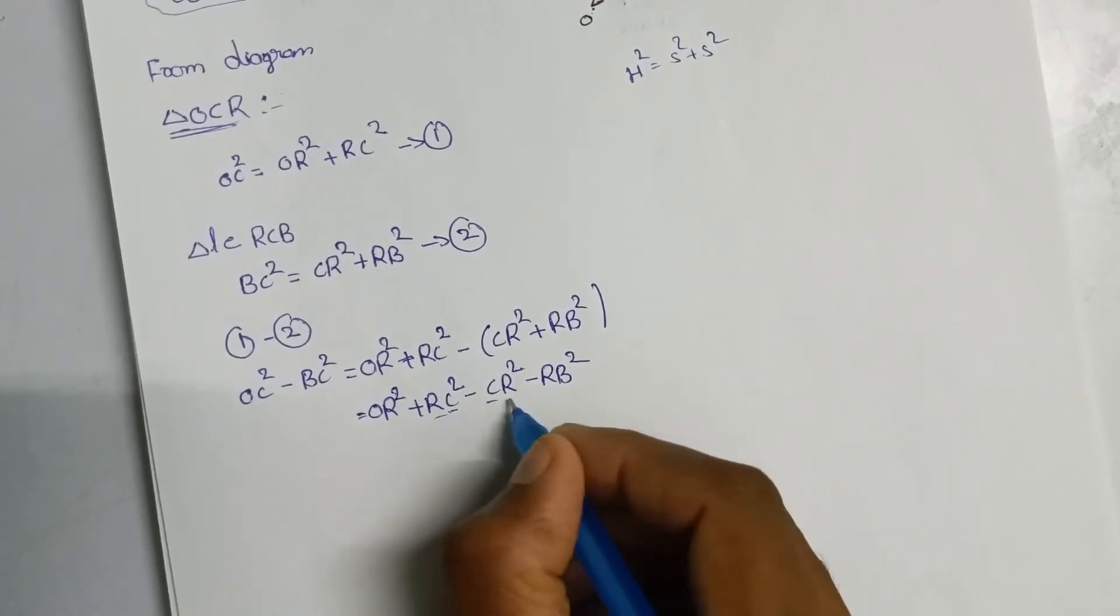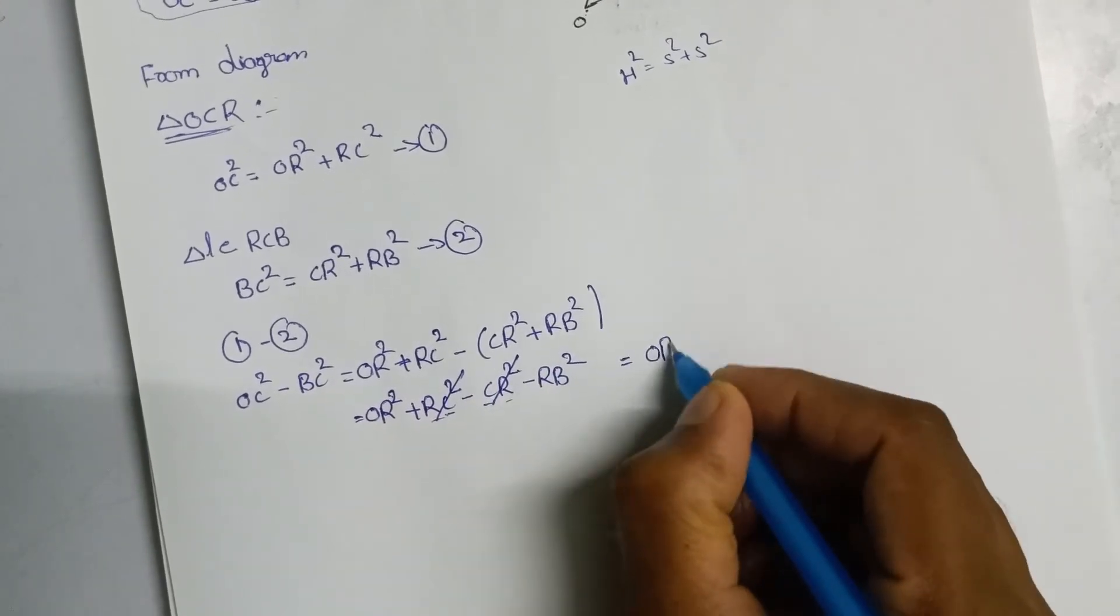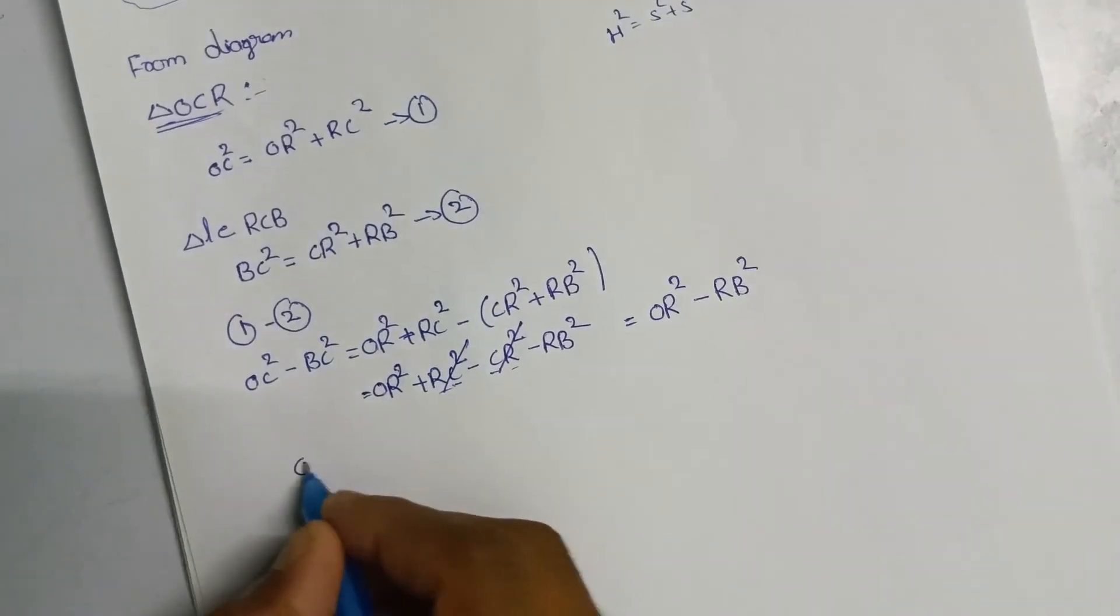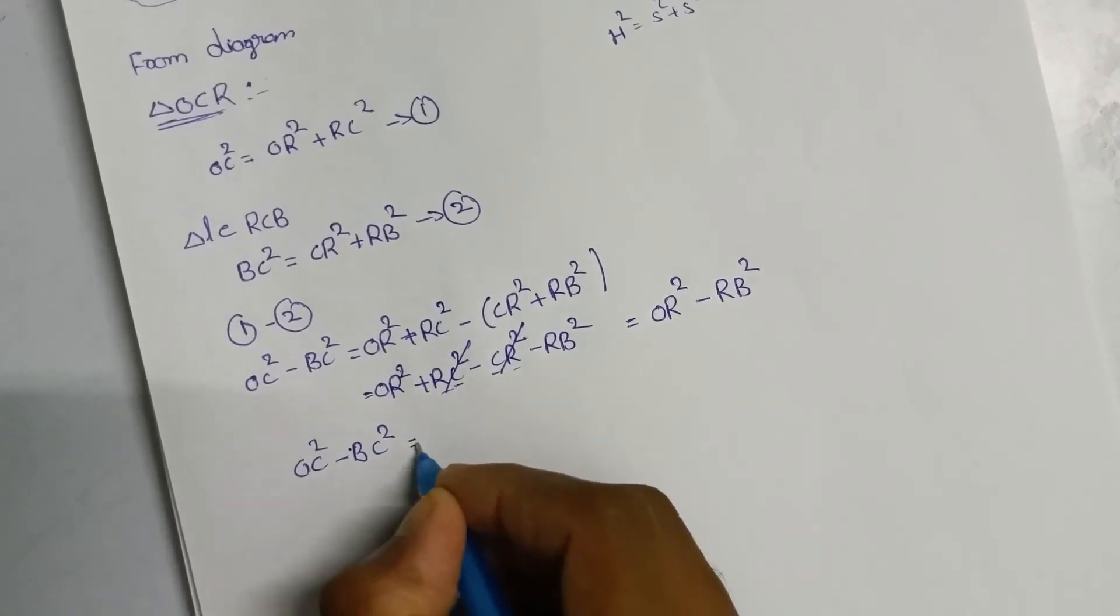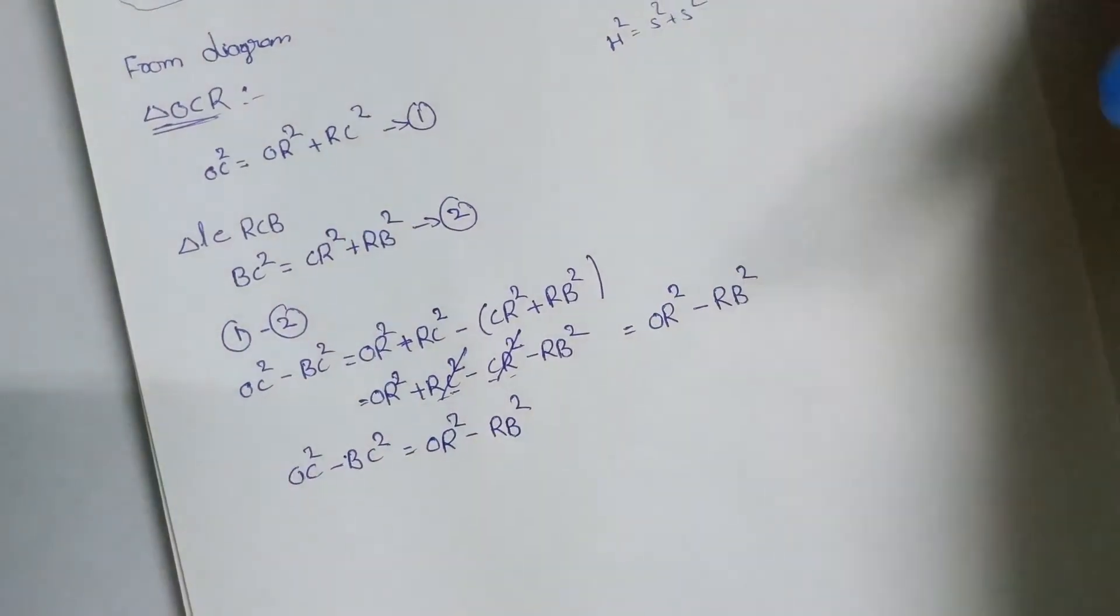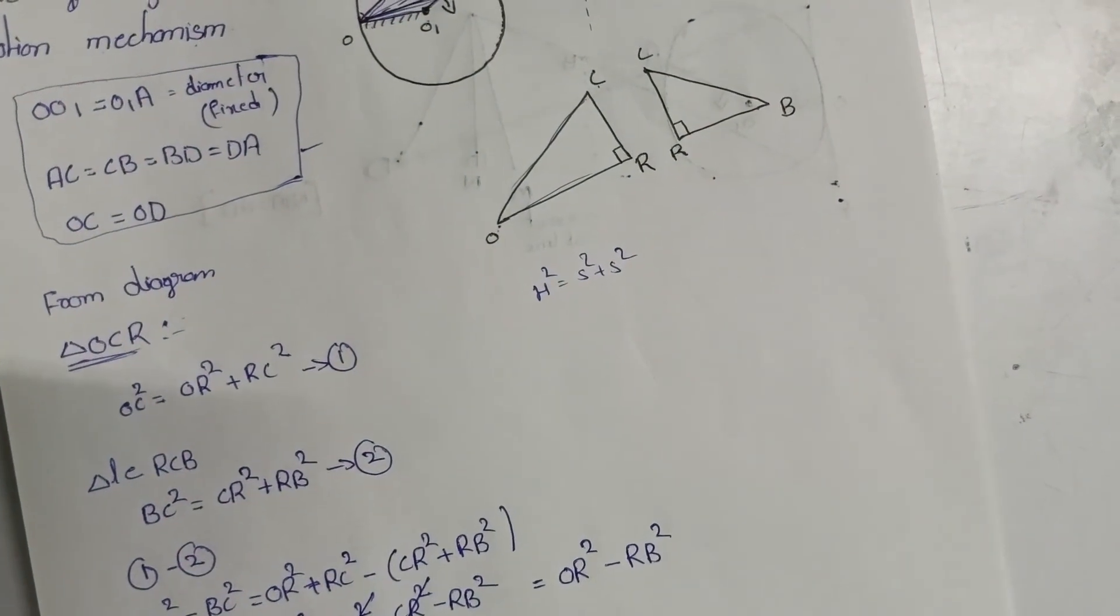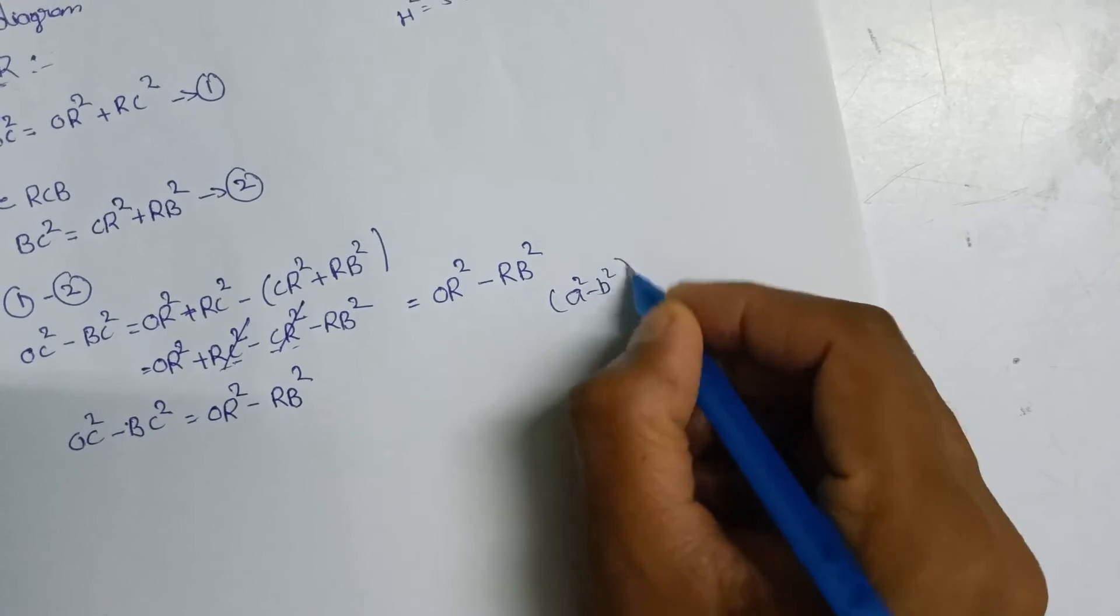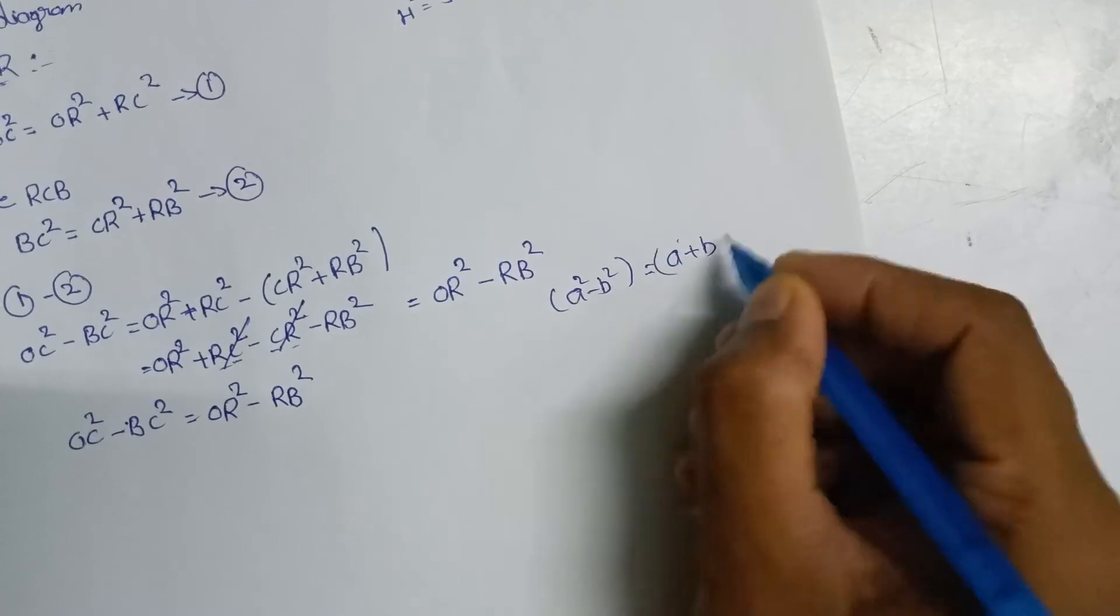OC squared minus BC squared is equal to OR squared plus RC squared minus CR squared plus RB squared. OC squared minus BC squared equals OR squared minus RB squared. Using the formula a squared minus b squared equals (a plus b)(a minus b), we get OR plus RB into OR minus RB.